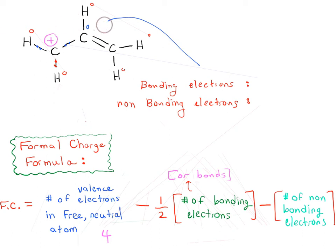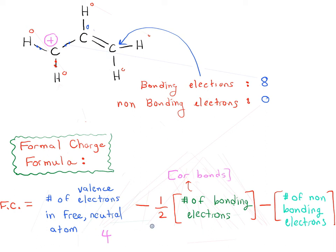Now let's look at the carbon on the far right. Again, it has four bonds, so eight bonding electrons. No non-bonding electrons. One-half times eight gives us four — same as the number of bonds. So: four minus four minus zero. That is also zero, so this carbon is neutral as well.